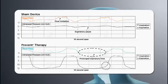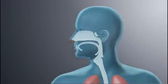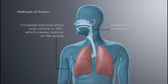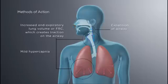There are three possible mechanisms through which ProVent therapy works: expansion of the airway until the start of the next inspiration; increased end expiratory lung volume or FRC, which creates traction on the airway making the airway less collapsible; and mild hypercapnia leading to increased respiratory drive to the upper airway.